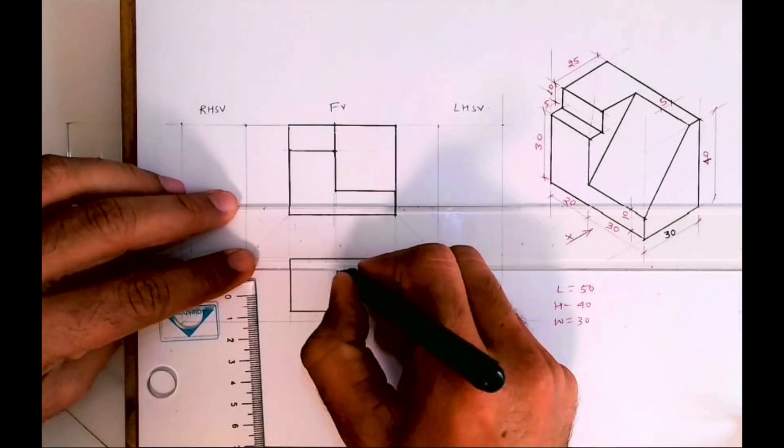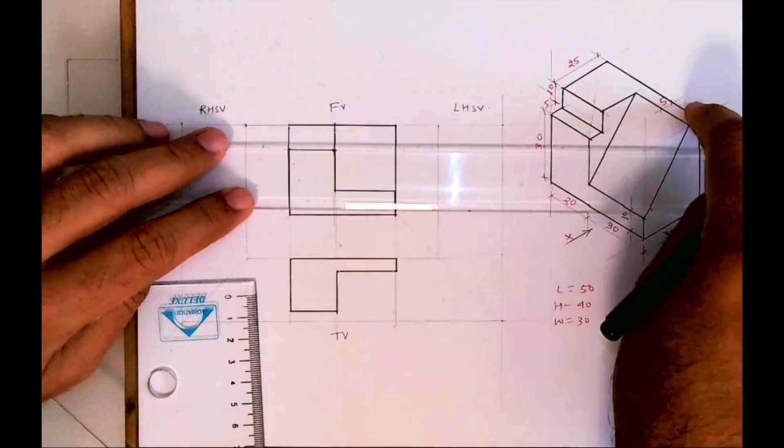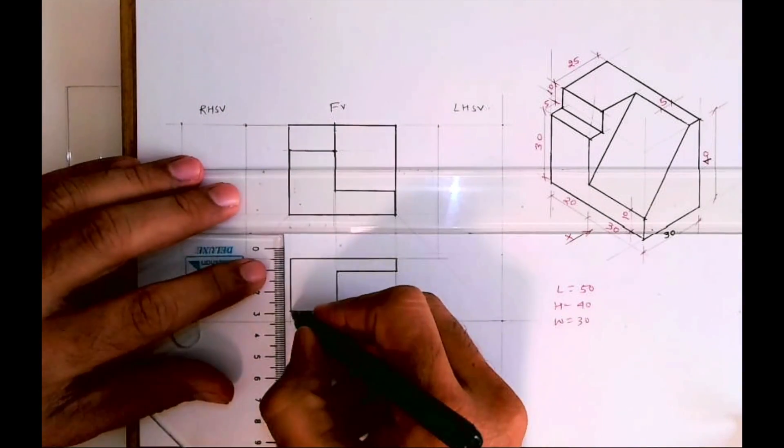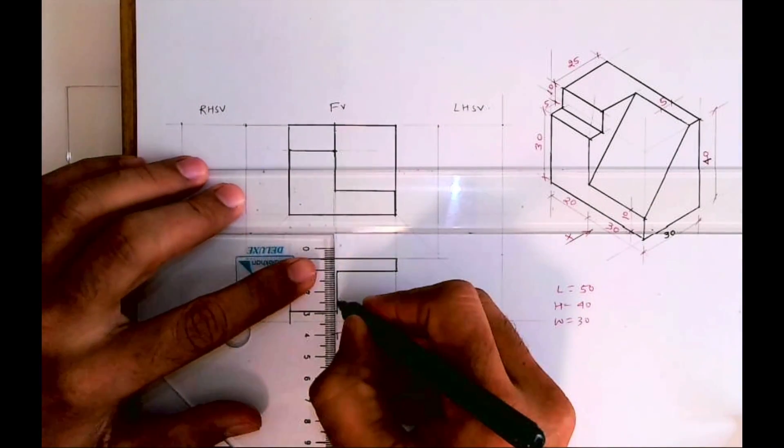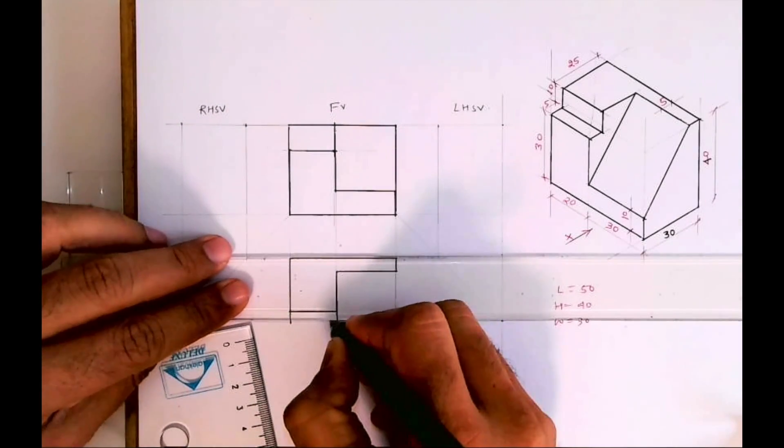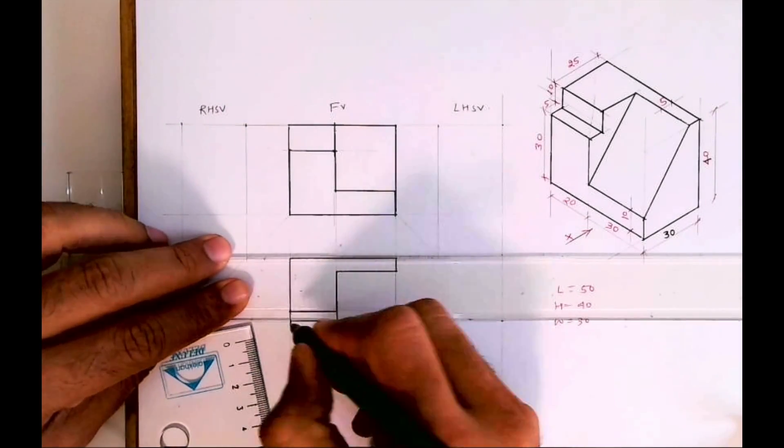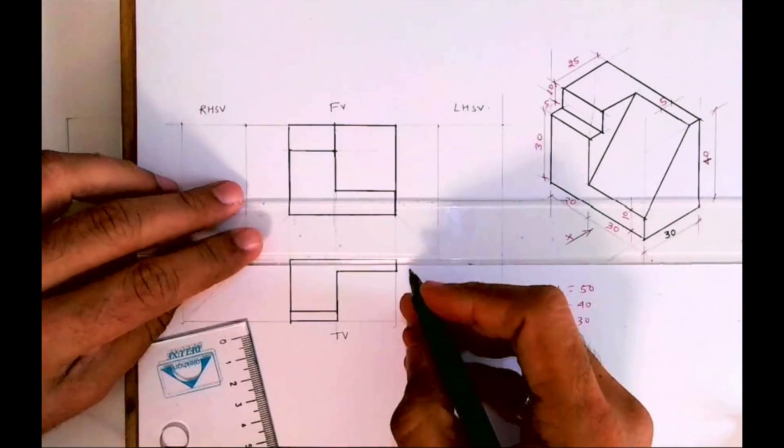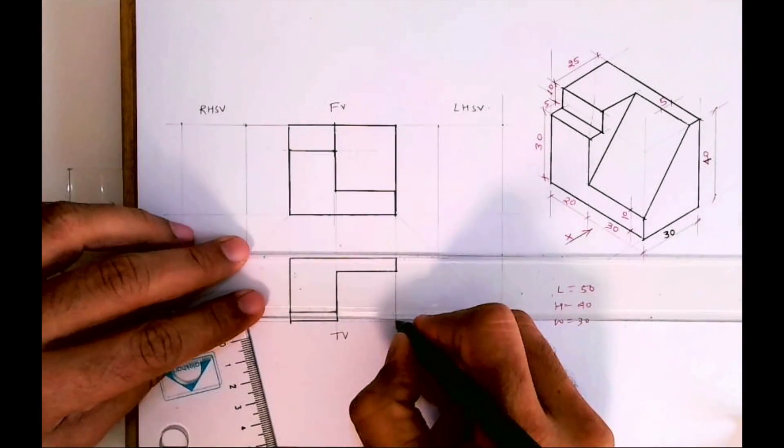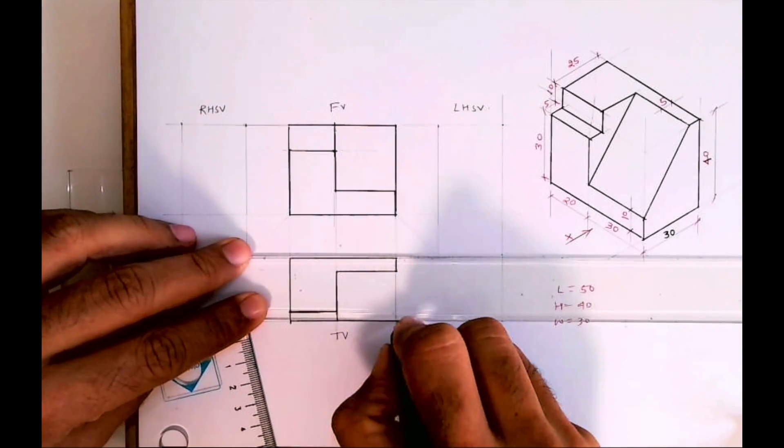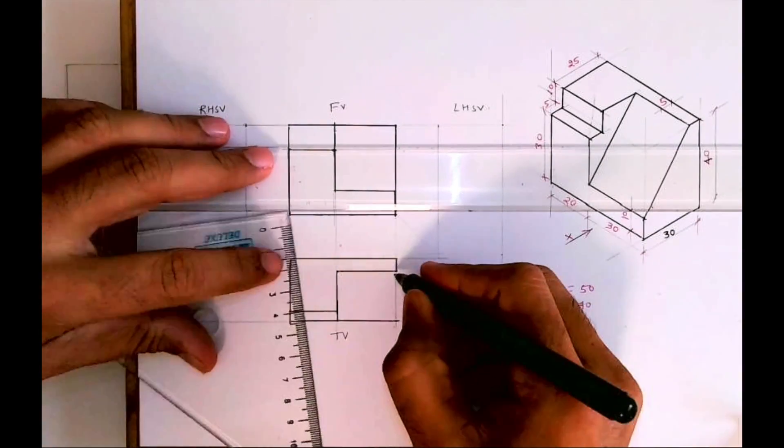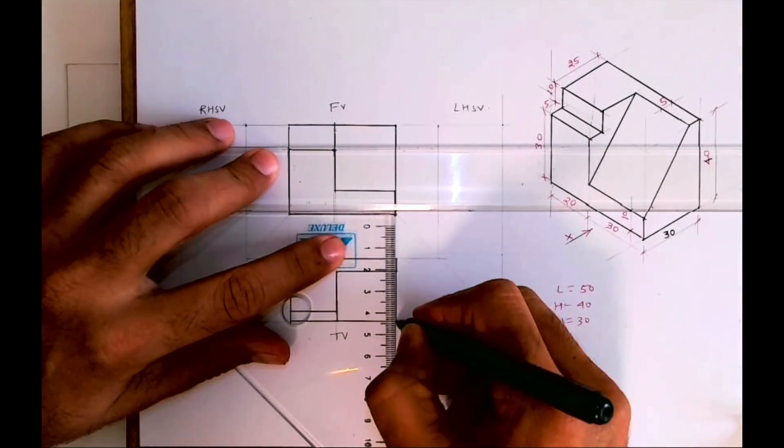So this is how it will look in top view. The same way, then this rectangle. It is a slope but it will appear as a rectangle.